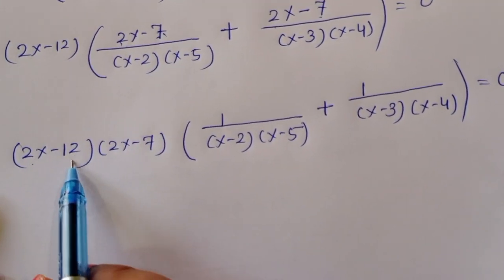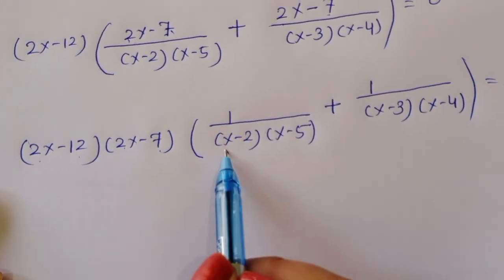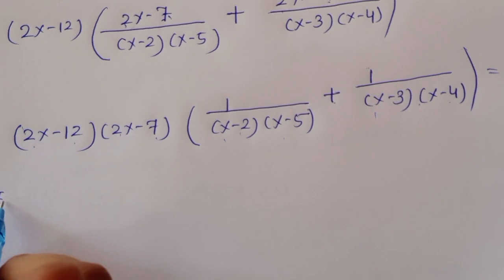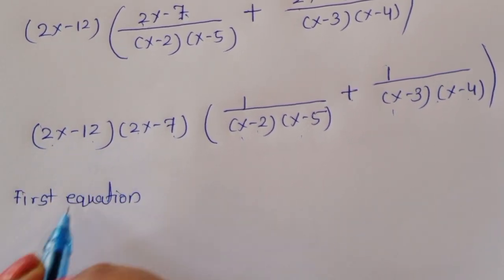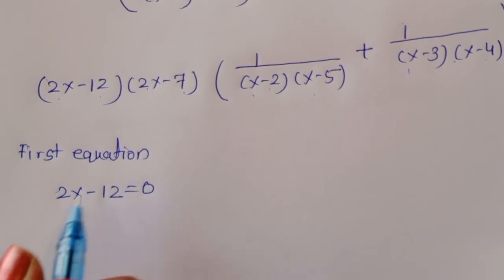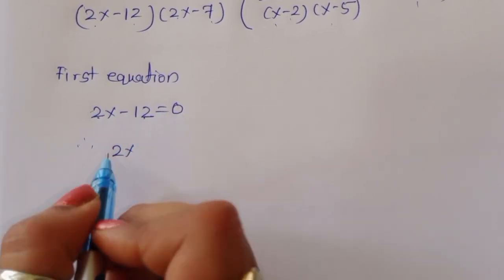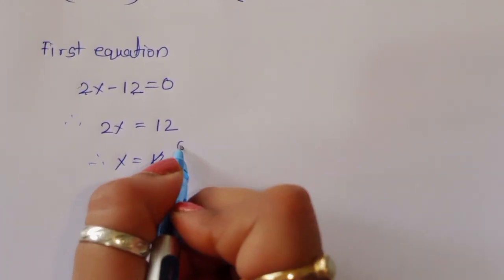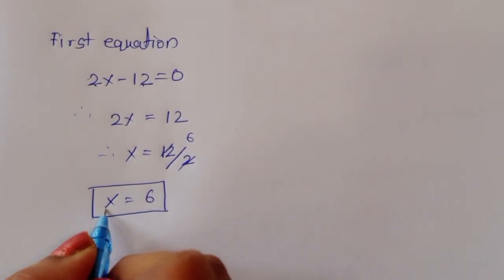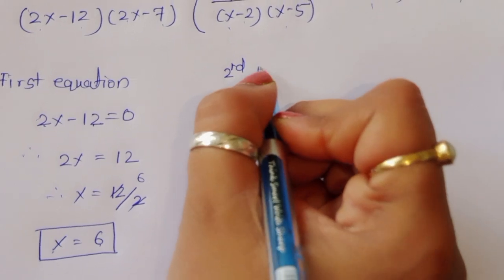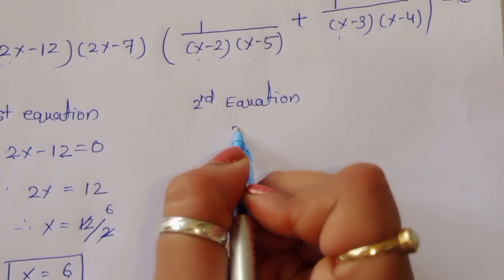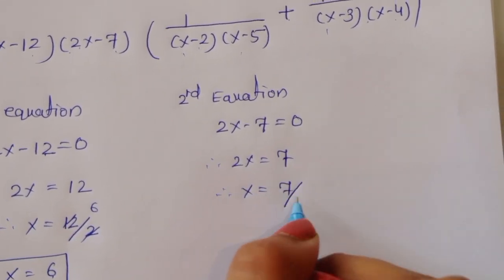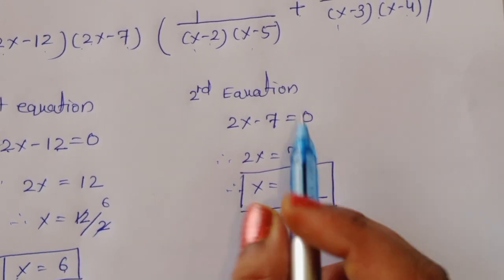We now have three equations: first, 2x minus 12 equals 0; second, 2x minus 7 equals 0; third, 1/[(x minus 2)(x minus 5)] plus 1/[(x minus 3)(x minus 4)] equals 0. From the first equation: 2x equals 12, so x equals 6. From the second equation: 2x equals 7, so x equals 7/2.